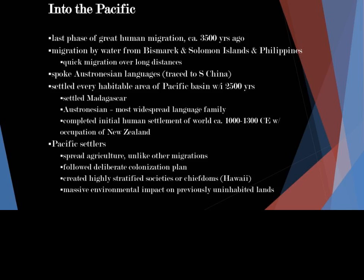They developed highly stratified societies or chiefdoms, and humans change their environment. They adapt to their environment, and they can also adapt the environment to how they live based on their survival. That led to many extinctions of different flora and fauna — plants and animals — in these previously uninhabited areas.